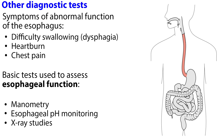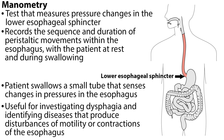There are several other diagnostic tests that may be used to evaluate abnormal function of the esophagus. While endoscopy can look at the lining of the esophagus, it does not usually provide information about the cause of the problem. Three major symptoms to evaluate include difficulty swallowing, heartburn, and chest pain. There are three basic tests used to assess esophageal function: manometry, esophageal pH monitoring, and x-ray studies. Manometry is a test that measures the pressure changes in the lower esophageal sphincter and records the sequence and duration of peristaltic movements within the esophagus. The patient swallows a small tube that senses changes in pressure in the esophagus.